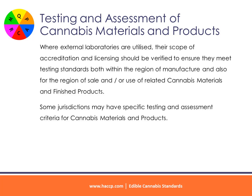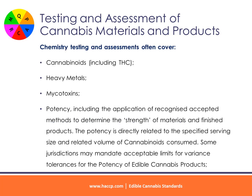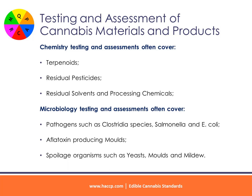Some jurisdictions may have specific testing and assessment criteria for cannabis materials and products. The general scope of testing and assessment includes chemistry, microbiology, and physical characteristics. Chemistry testing and assessments often cover cannabinoids including THC, heavy metals, potency — including the application of recognized accepted methods to determine the strength of materials and finished products. The potency is directly related to the specified serving size and related volume of cannabinoids consumed. Some jurisdictions may mandate acceptable limits for variance tolerances for the potency of edible cannabis products. Chemistry testing also covers terpenoids, residual pesticides, residual solvents, and processing chemicals.